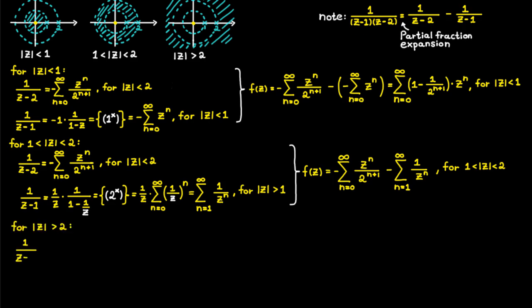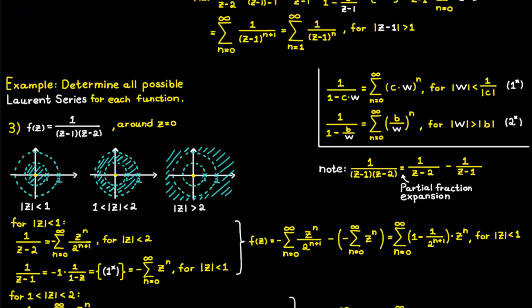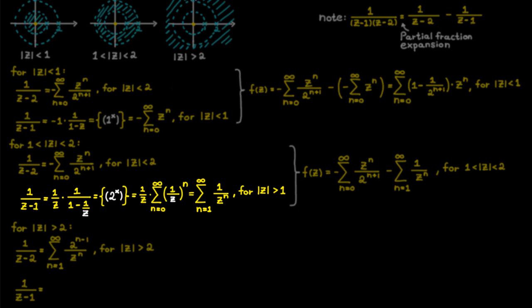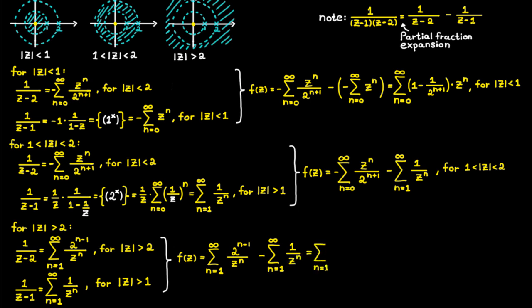For the last domain, 1 divided by (c minus two) from earlier gives us its expansion, and the only thing we really need to determine is the Laurent series for 1 divided by (c minus one) valid in this outer domain — but we already did that in the last example. Adding these two results together, we get the Laurent series for function f valid when the absolute value of c is greater than two. Thanks for watching.